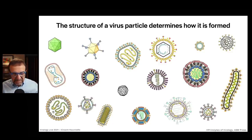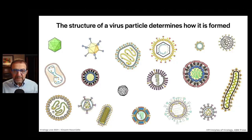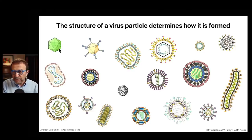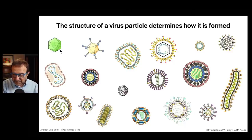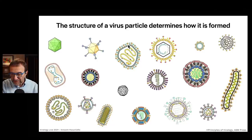If you look at any particular virus, you can know how it's formed. The structure of a virus particle determines how it's formed. So if you look at an icosahedral particle here in the upper left, you should immediately know, after today's session of course, how it's formed. And if you look at an enveloped virus particle with glycoproteins in the viral membrane, you should know how it is formed.